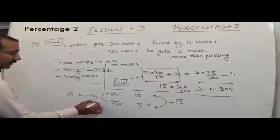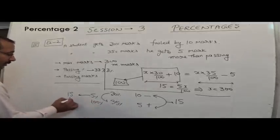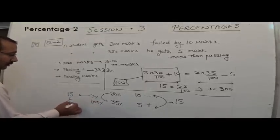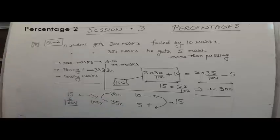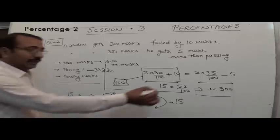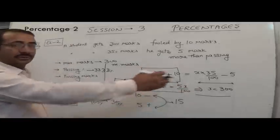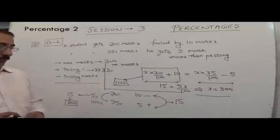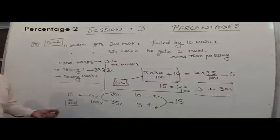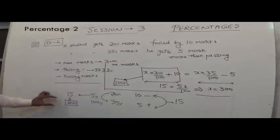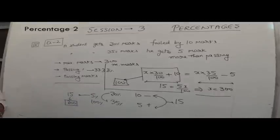So we can say 5% corresponds to 15 marks. We have to find the maximum marks, which is 100%. Therefore 100% corresponds to 300. We can say the maximum marks is 300. With maximum marks 300, we can find the passing marks as well as the passing percentage.